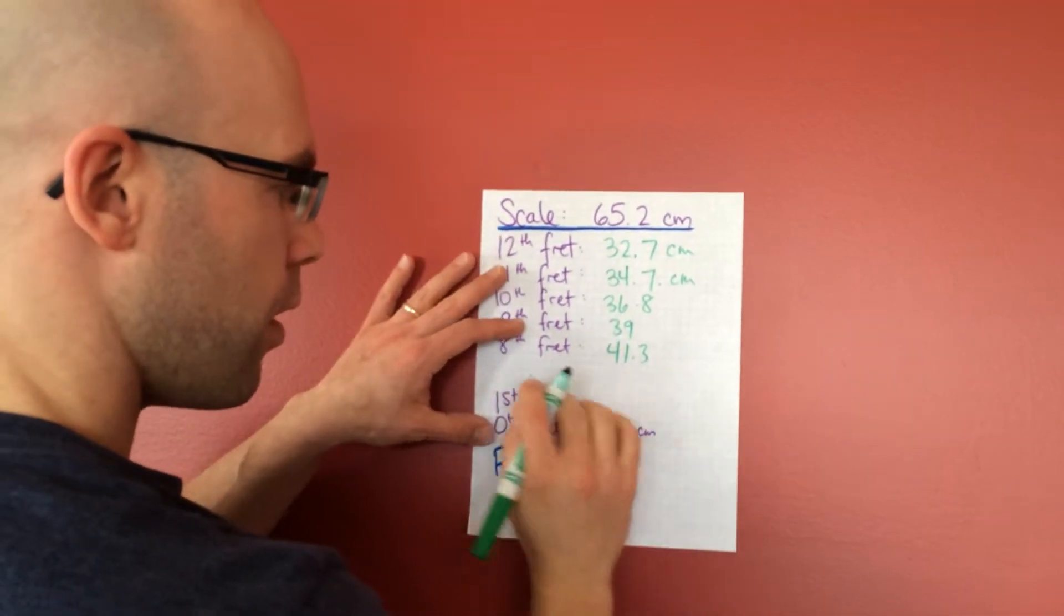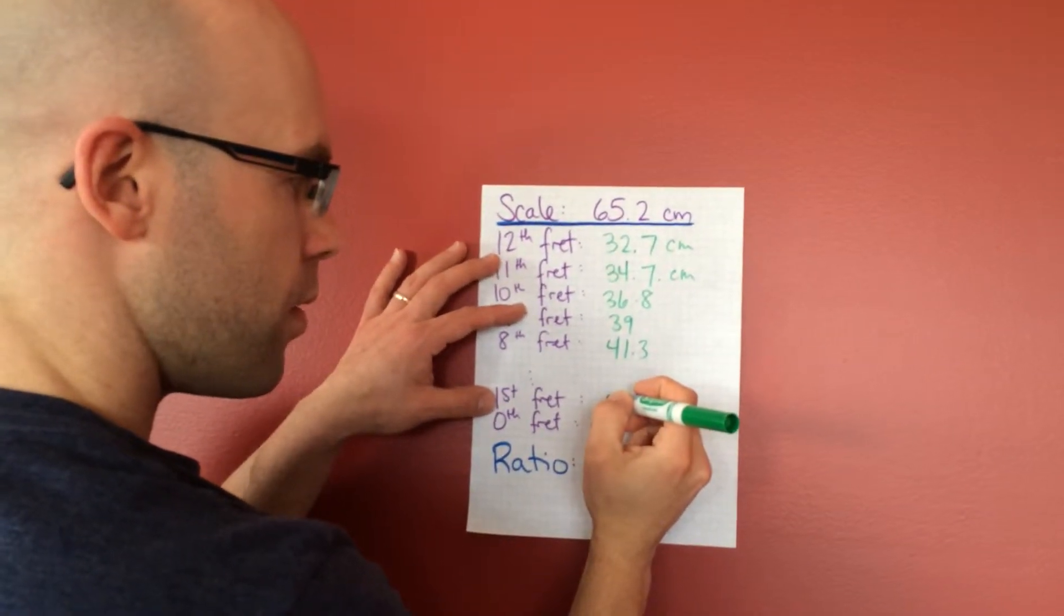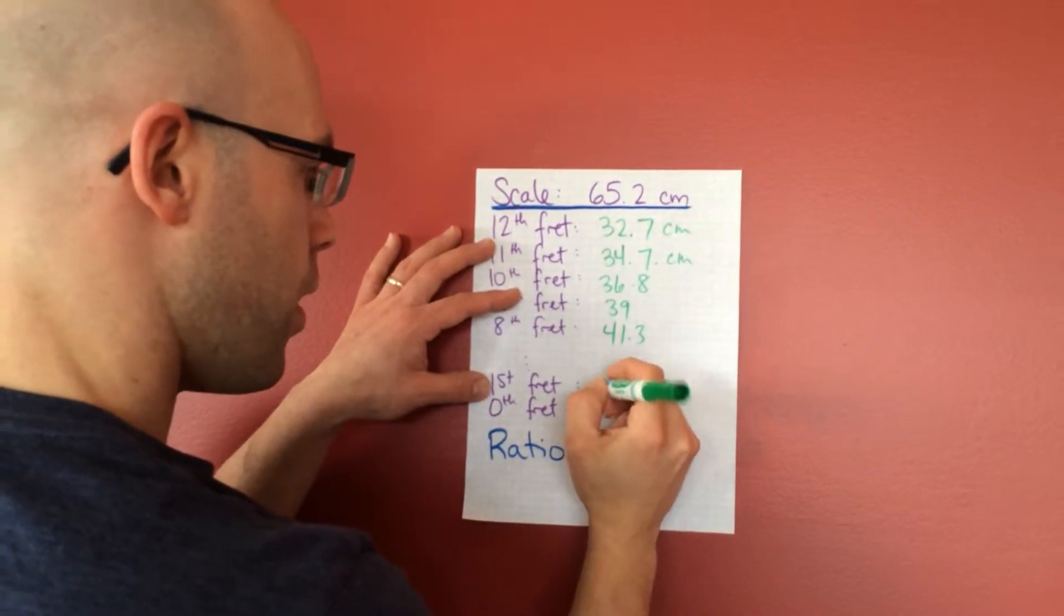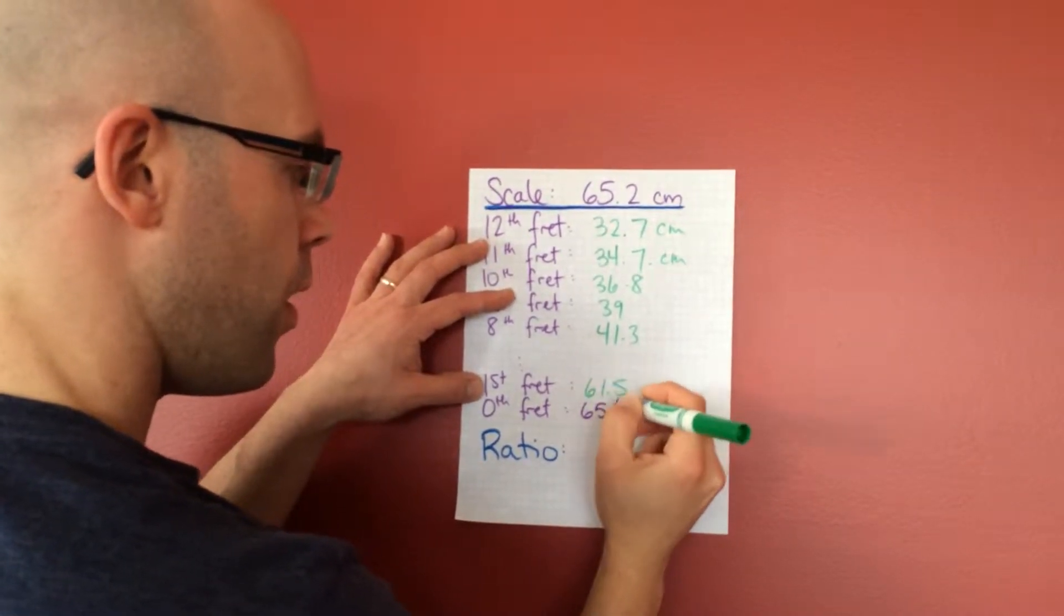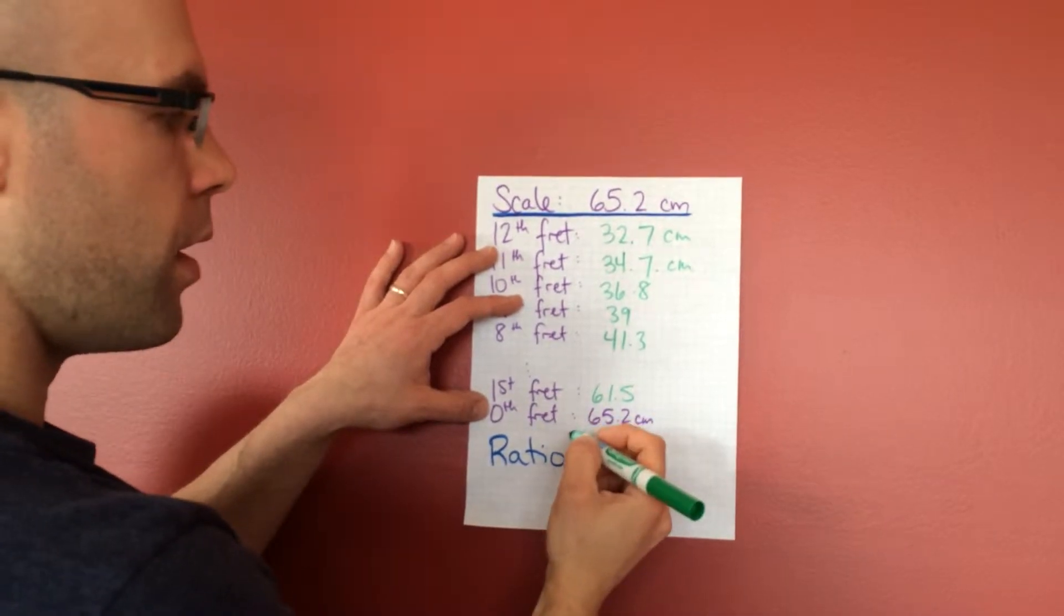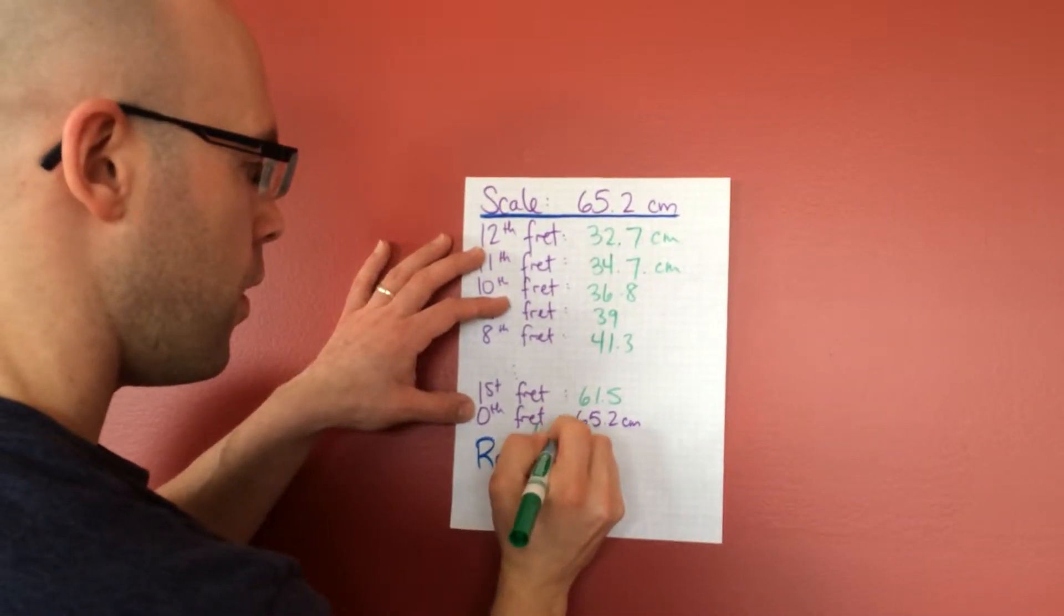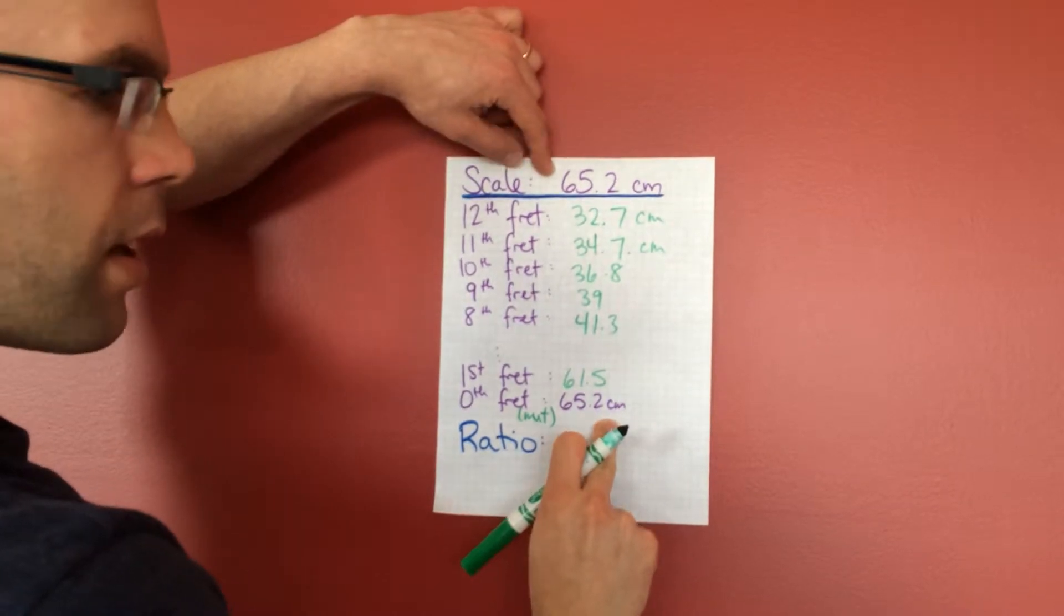I'm going to skip along a little bit here. The last couple of frets, the top fret, is 61.5, and then the 0th fret, which we call the nut, is 65.2. That's the entire scale length.